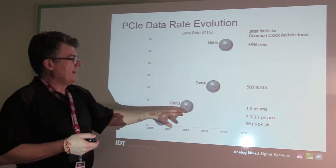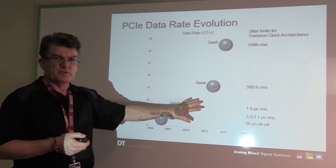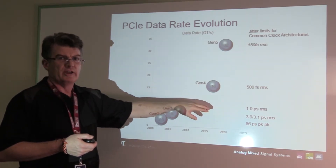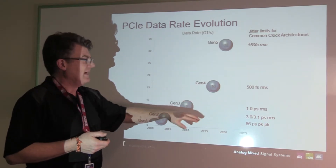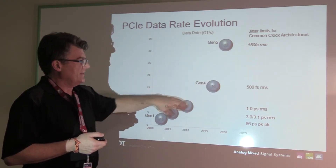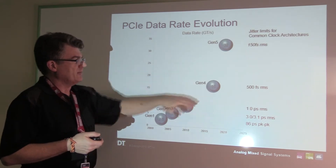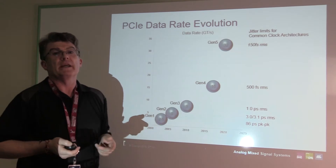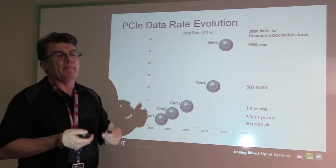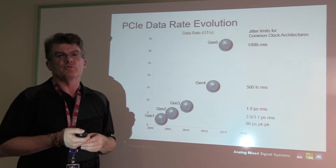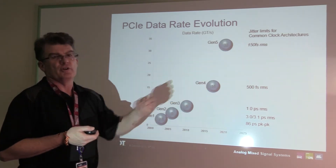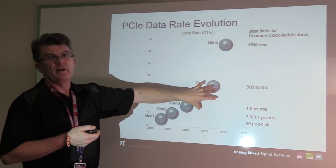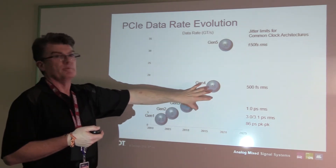The cool thing about Gen 3 and Gen 4 is they use the same set of filters to filter the jitter of the clock before you calculate your value. This commonality means that if you were looking at a clock specified for PCI Express Gen 3 and it had a maximum jitter value less than 500 femtoseconds, then it's actually a Gen 4 clock.